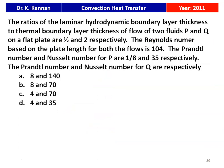Next question from the 2011 question paper: the ratio of laminar boundary layer thickness to thermal boundary layer thickness for two fluids P and Q on a flat plate is 1/2 and 2 respectively. The Reynolds number based on plate length for both flows is 10⁴. The Prandtl number and Nusselt number for P are 1/8 and 35 respectively. Find the Prandtl number and Nusselt number for Q. The answer is Pr = 8, Nu = 140.